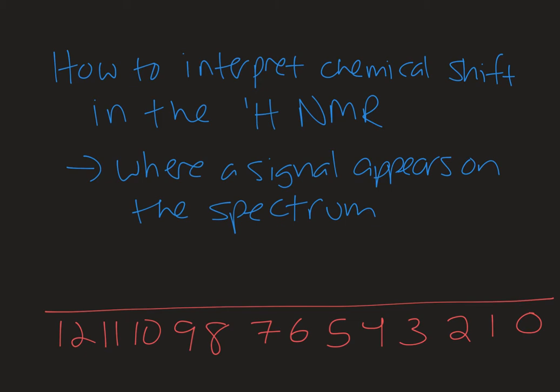Chemical shift is basically where a signal shows up in the spectrum. For a proton NMR you're looking at a chemical shift range of about 0 to 12. The units are parts per million, and we'll talk about why that is on the next slide.